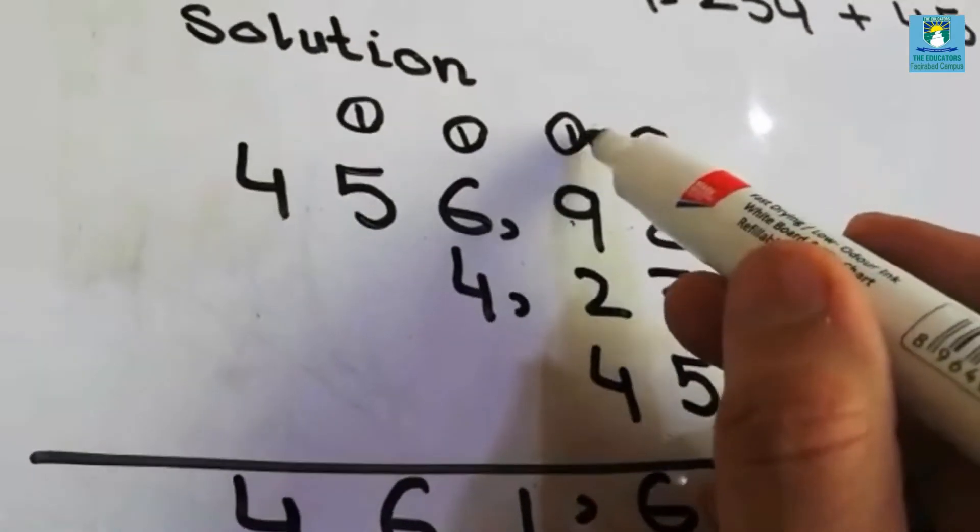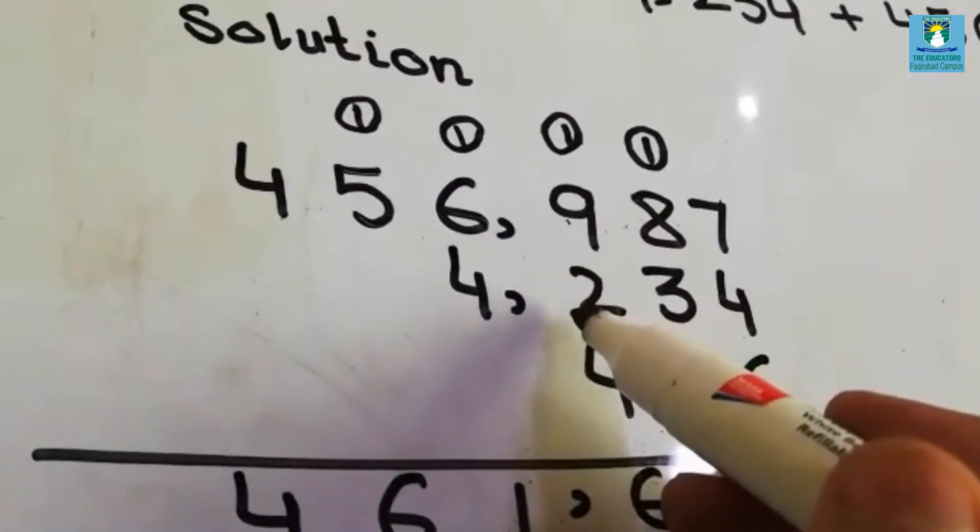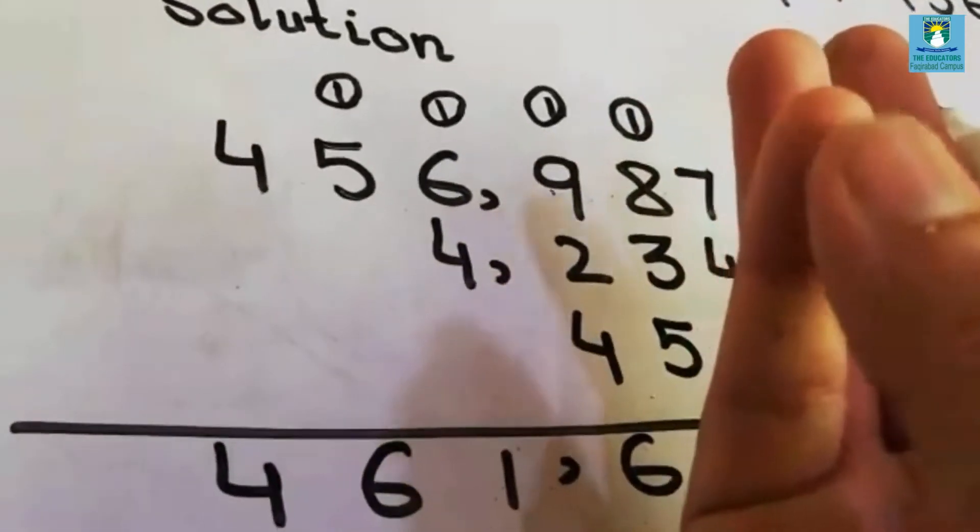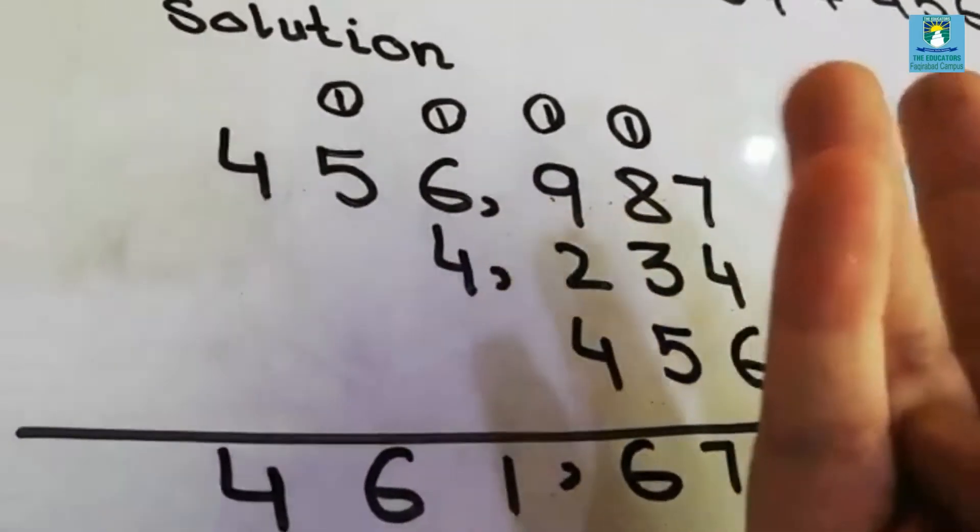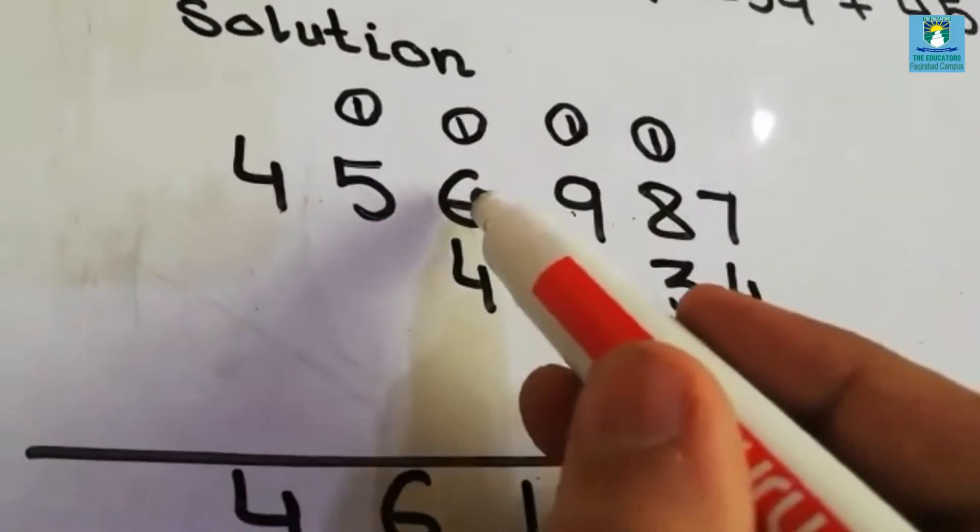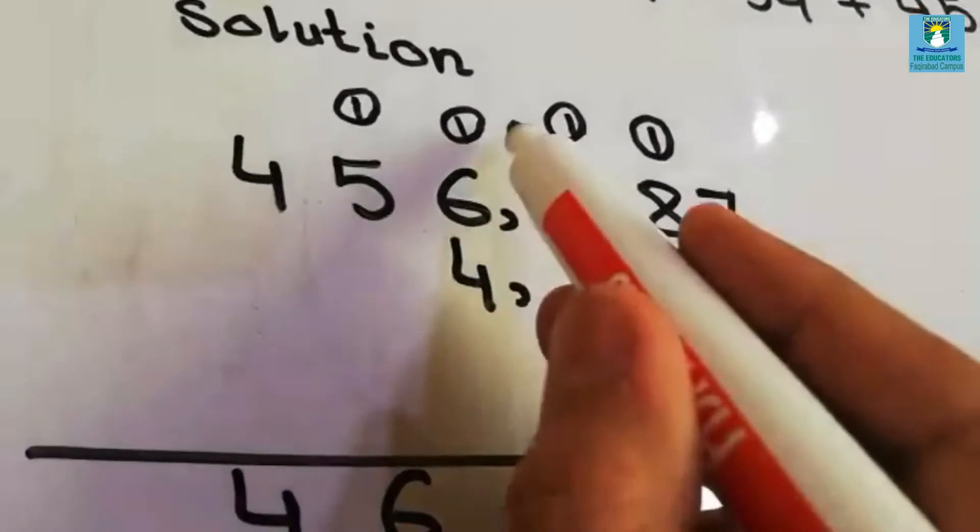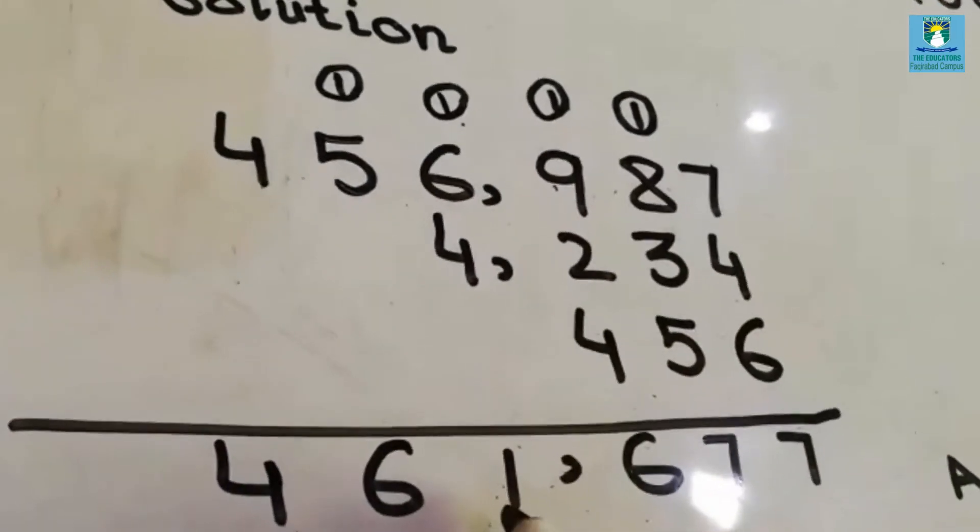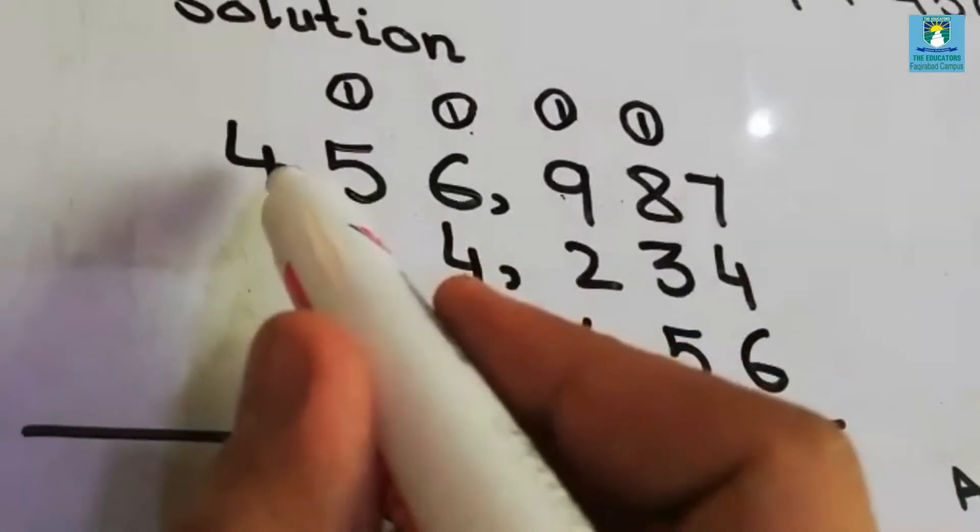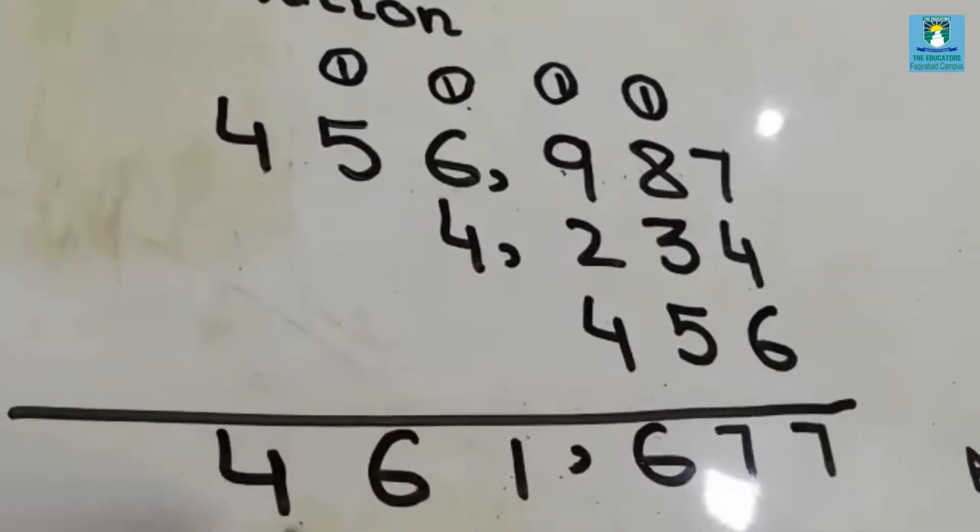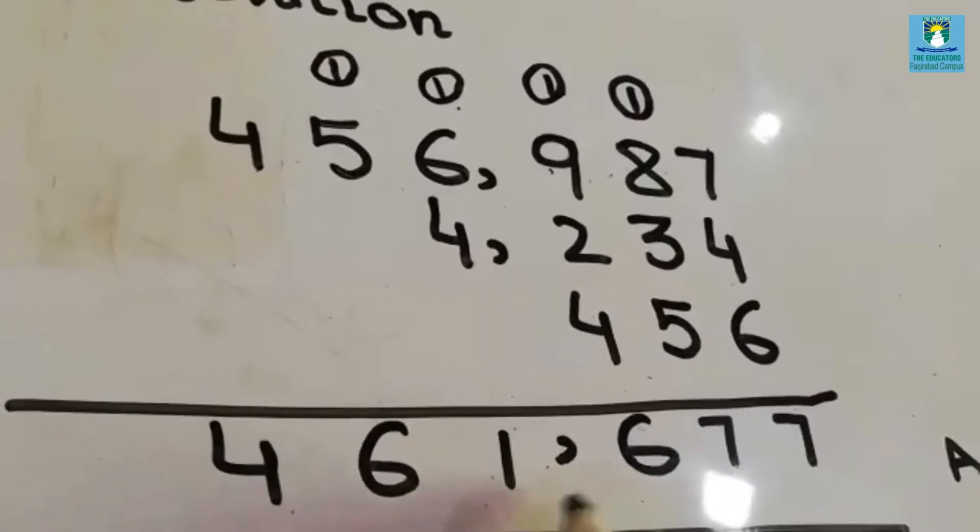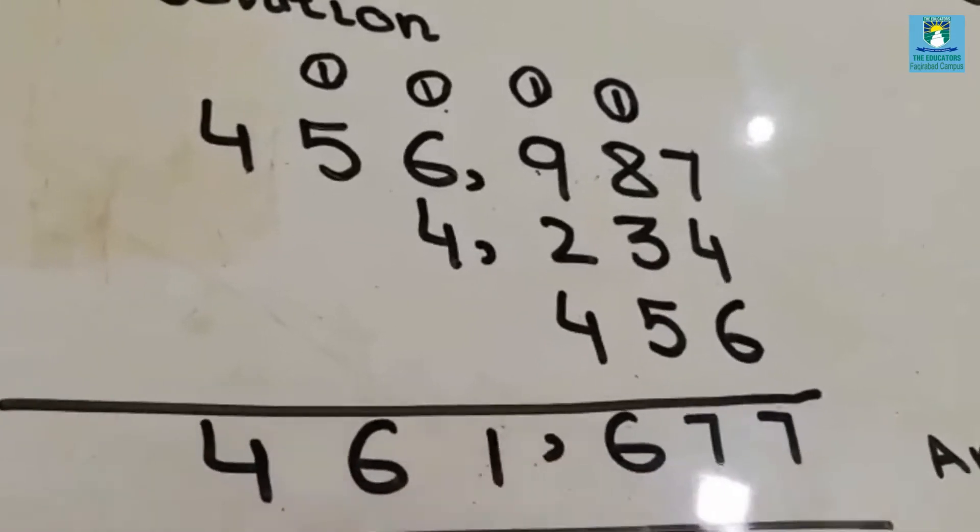9 plus 1 is 10, 10 plus 2 is 12, 12 plus 4 is 16. 1 carry. 6 plus 4 is 10, 10 plus 1 is 11. So write here 1, 1 carry. 5 plus 1 is 6, 4. So we will write here 4. 461,677 will be your answer.